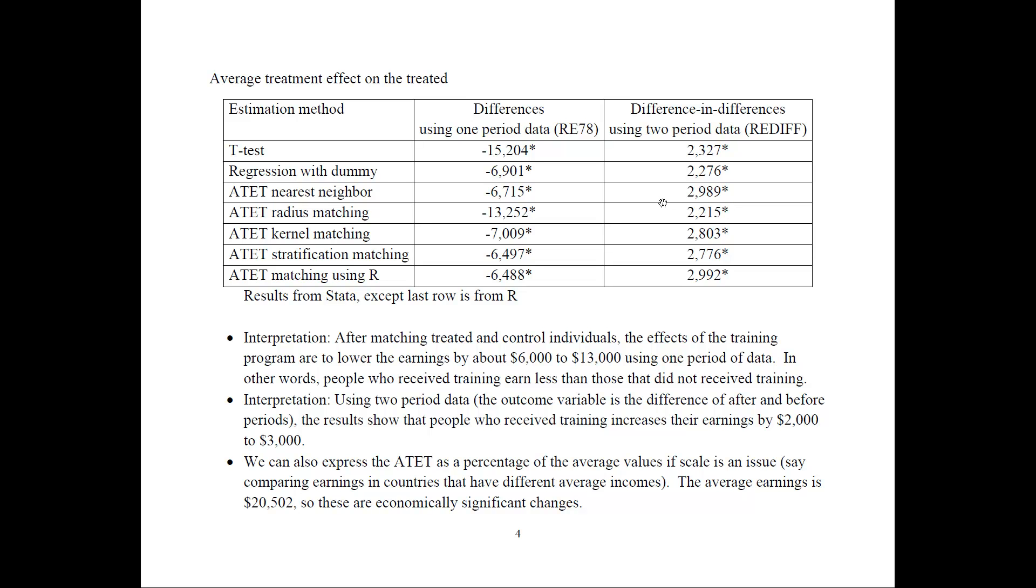These are the numbers that you basically need to include in your paper. Notice that they differ from one method to the next. I also noticed that depending on which independent variables you use, those results would also change. Make sure that you use the best possible variables for the probit model. Another thing that you can do, but it's not done very frequently, is to express these differences as a percentage of the average values if scale is an issue. For example, if we compare the earnings in countries that have different average incomes. In our case here, the average earnings was $20,000 something in dollars. To get a difference of like $6,000, that is an economically significant change because it represents a relatively large percentage. You can also express these differences as a percentage.